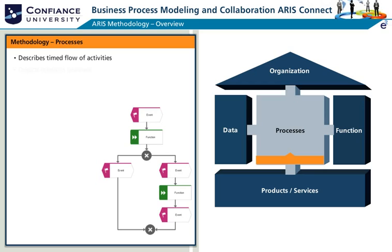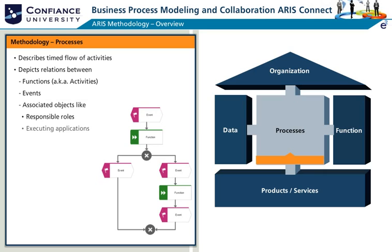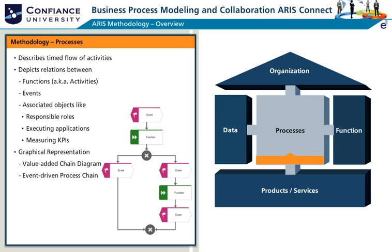The process view describes timed flow and decisions of processes. It also shows how processes are connected to resources, data, and the functions of the business. It depicts relations between functions, responsible roles, executing applications, measuring KPIs, and others. Some of the typically used graphical representations are the model types: value added chain diagram, event driven process chain, and BPMN models.